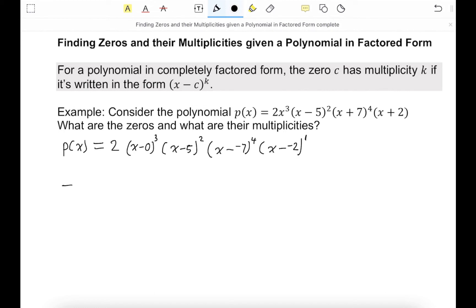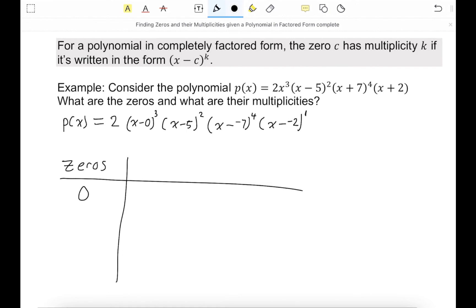So the zeros in here are 0, 5, negative 7, negative 2. Just getting them from here. And the multiplicity of each is this number here. So 3, 2, 4, and 1.